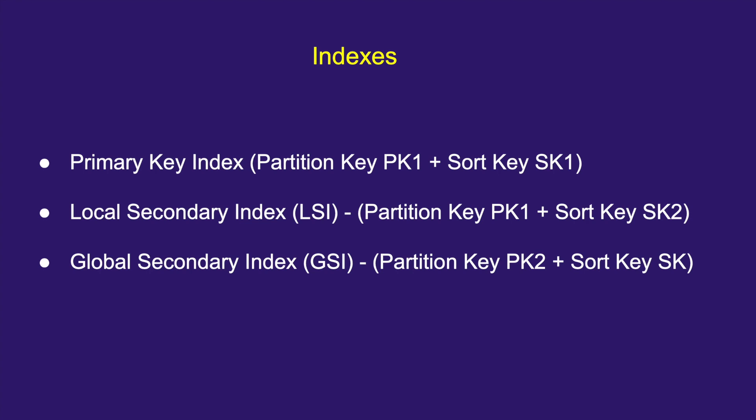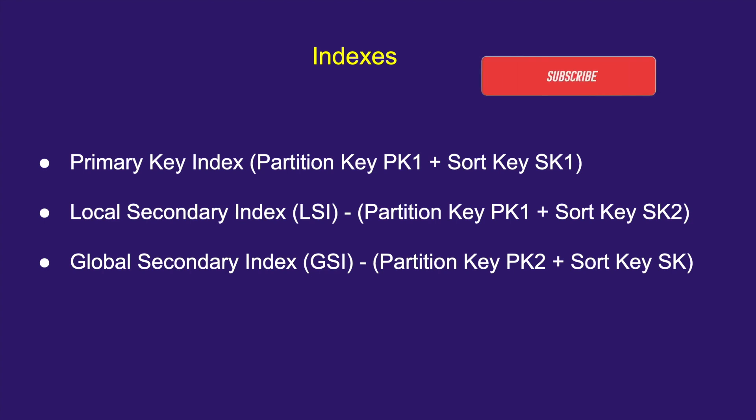To summarize indexes: you can create a primary key index when you create a table, a local secondary index, and a global secondary index. The differences lie in how you choose the partition keys and sort keys for each index type. I'll stop here and ask one question to make sure you learned something: when you create a table, which settings determine whether your application is throttled or not? Comment below with your answer — thank you so much!